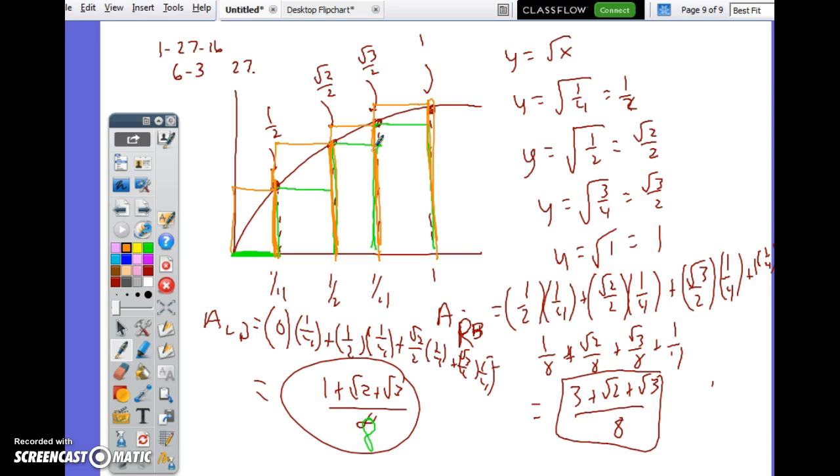We can do sixteenths, we can do 32nds. Now at some point, to answer Stephanie's question, if it gets ridiculous, you don't know how to write it in this form, you could actually decimalize it. But only when it gets ridiculous. Alright, keep working.